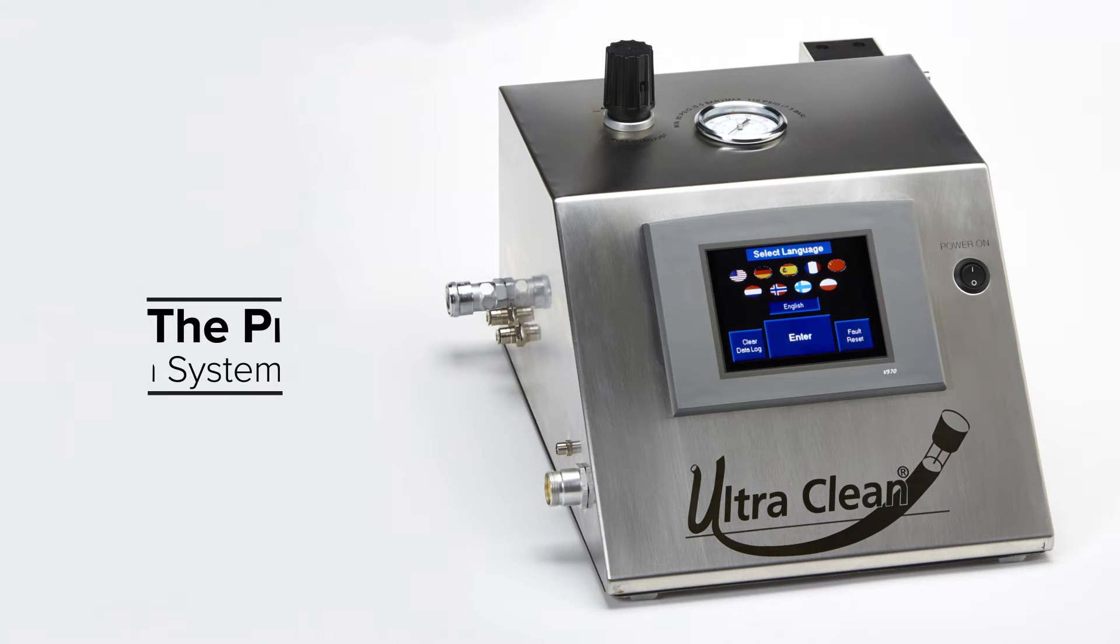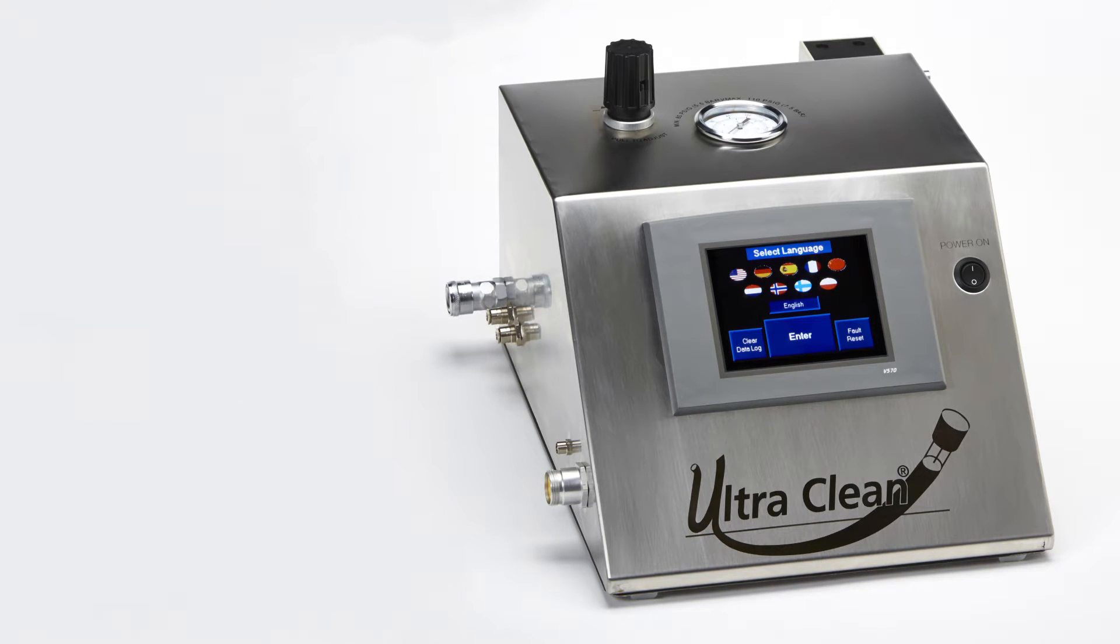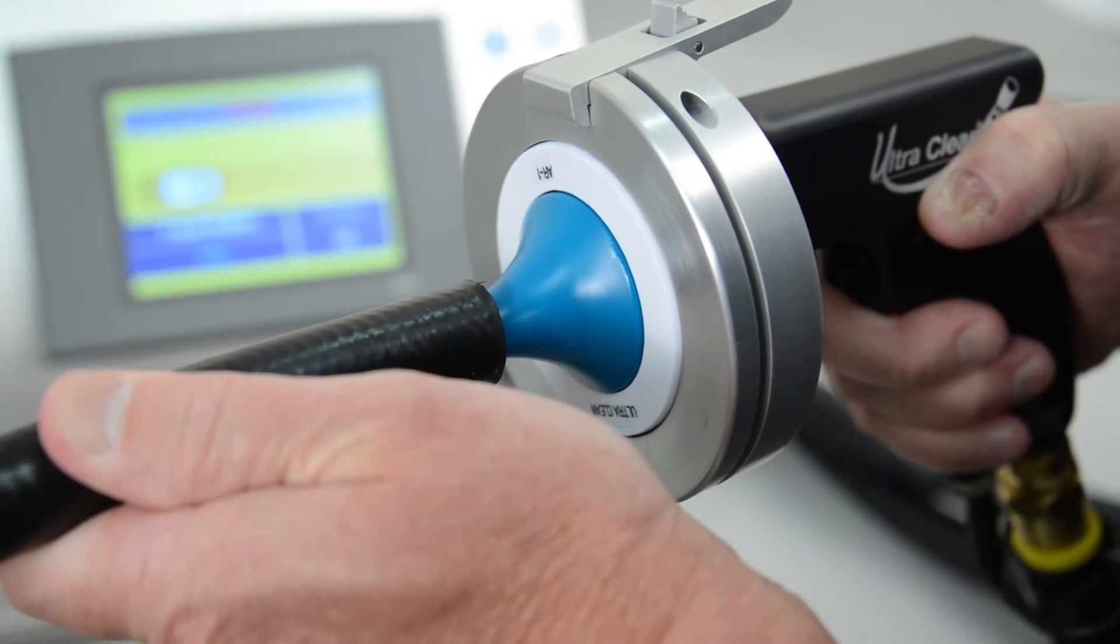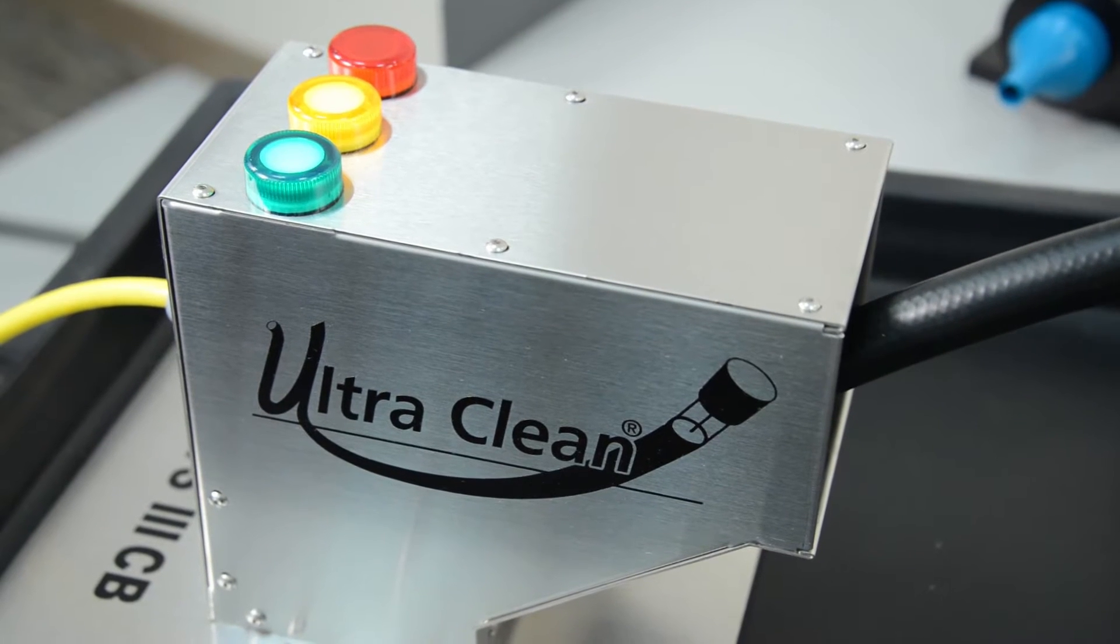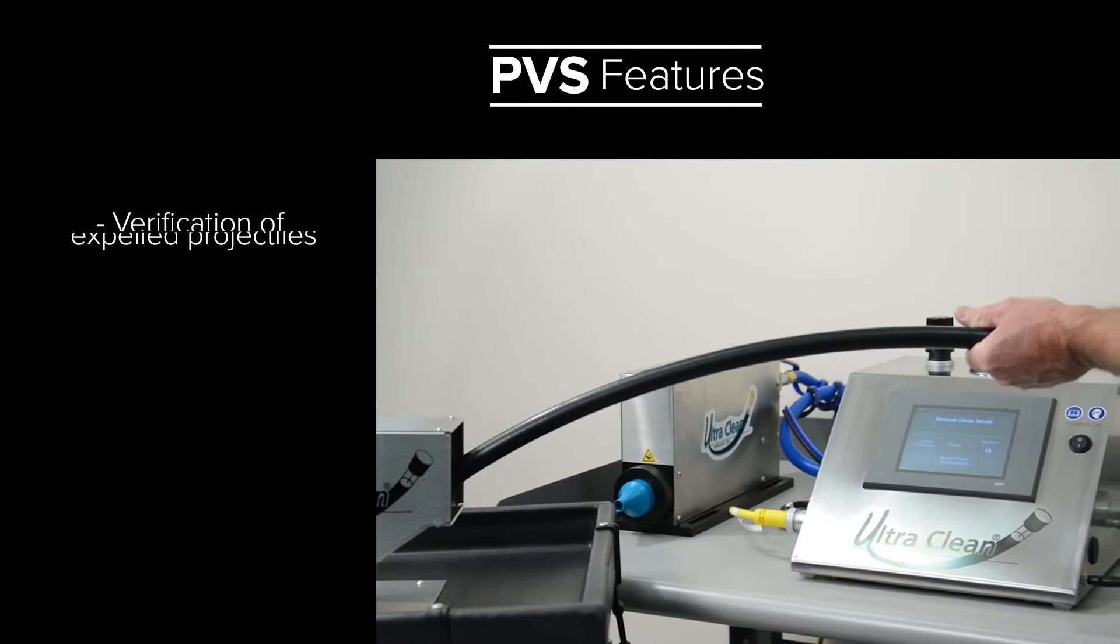UltraClean Technologies Projectile Verification System. The Generation 3 projectile verification system has been engineered to ensure that all UltraClean projectiles exit the hose or tube and enter the containment barrel along with the expelled contaminants.